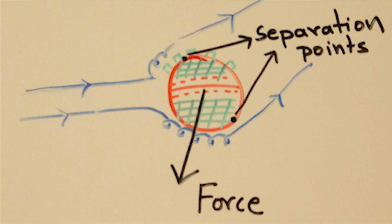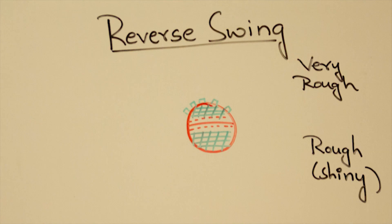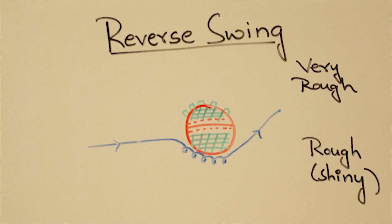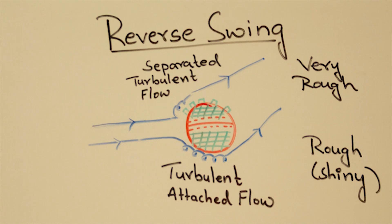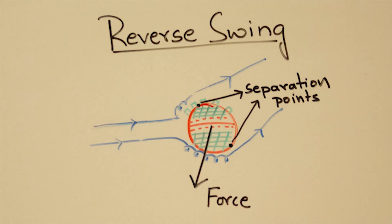Now both sides are turbulent, but the roughness on one side makes the flow more unstable and prone to separation. It is at this point that the direction of the force reverses and we get reverse swing. For reverse swing, the bowler can even hold the seam straight — the flow is turbulent on both sides, but the roughness on one side causes the ball to swing towards the smoother side. Interestingly, technically if the bowler bowls fast enough with the seam angled, even a new ball can get reverse swing.